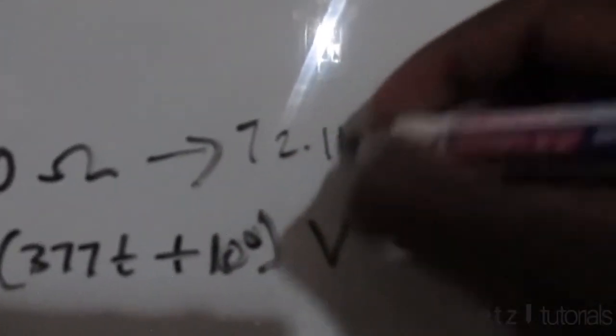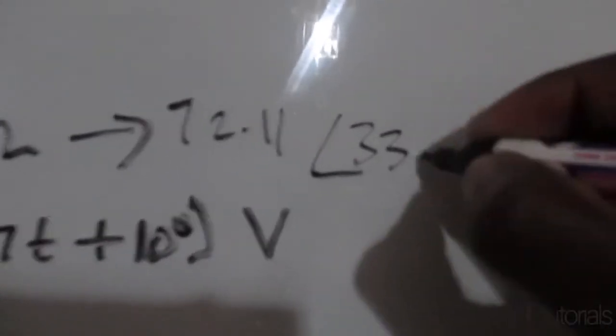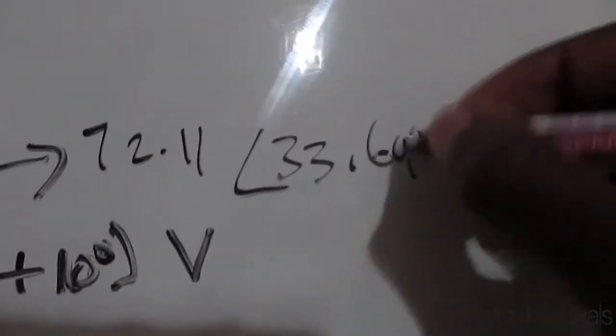So the impedance in polar form can be said to be this - just transform it into polar form using your calculator. So this is 33.69 degrees.